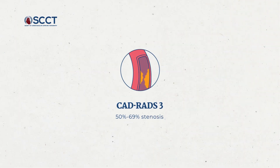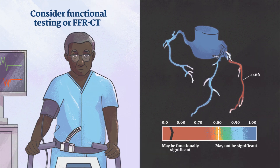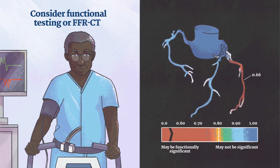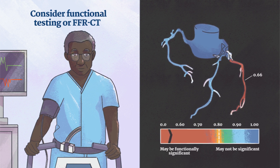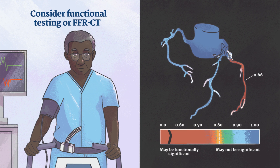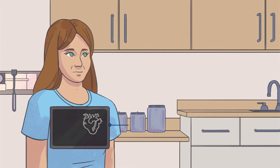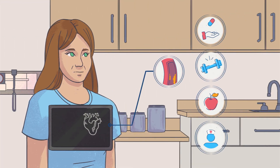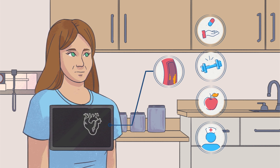For patients with 50 to 69 percent stenosis, this is graded as CADRADs 3. Consider a functional assessment with a stress test or functional evaluation of CAD, including CT perfusion or FFRCT, as shown here on the right. You may consider symptom-guided anti-ischemic and preventative therapies, risk factor modification, as well as guideline-directed care.